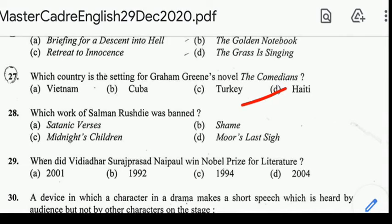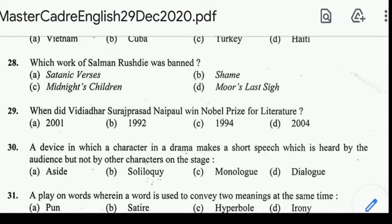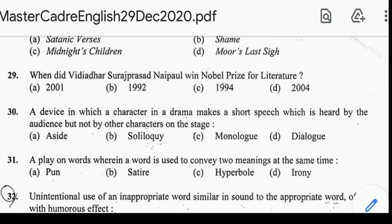Question: which work of Salman Rushdie was banned? Correct answer: option E, Satanic Verses. Question number 29: when did Naipaul win the Nobel Prize for Literature? Correct answer: option E, 2001.